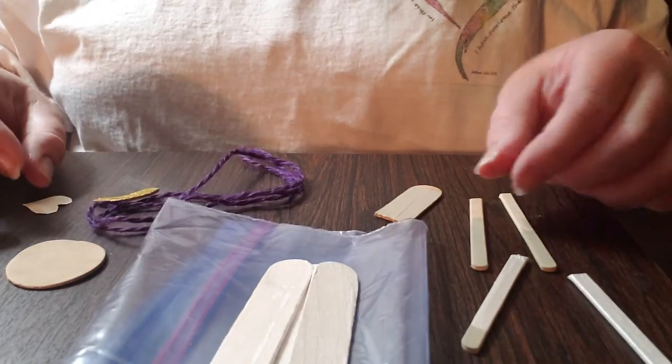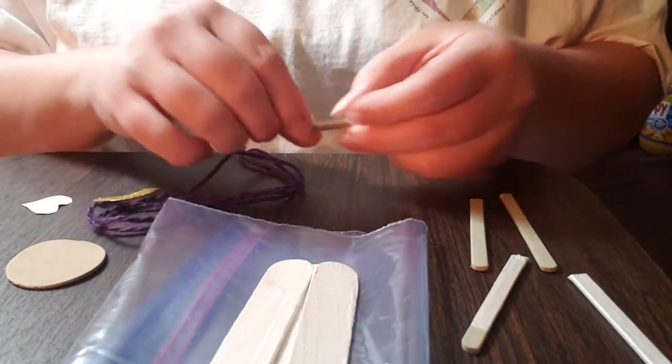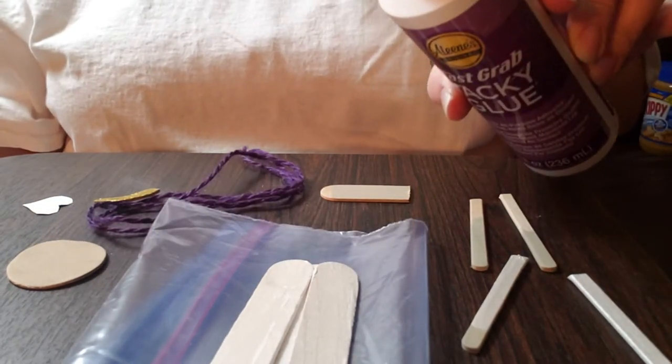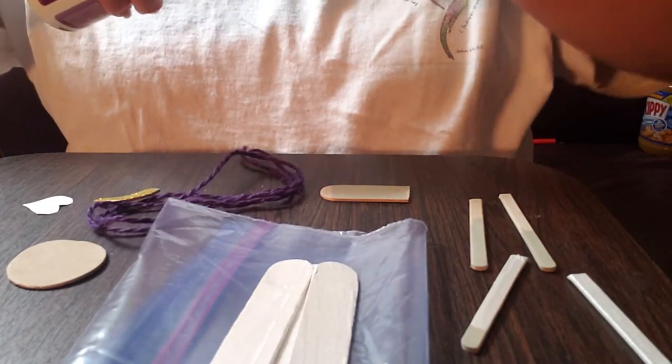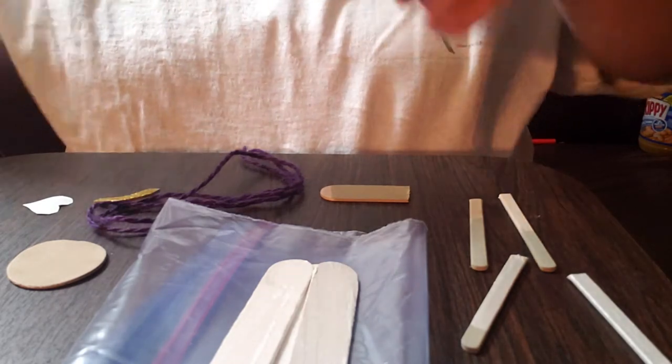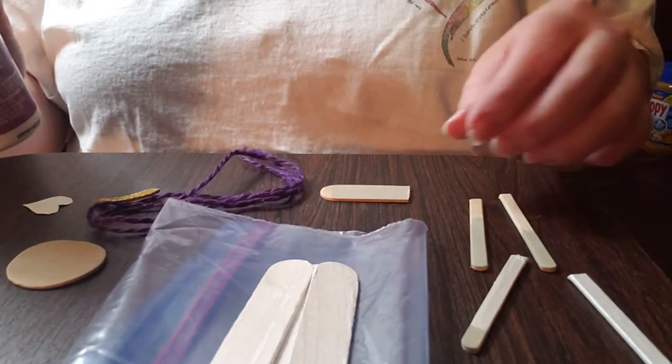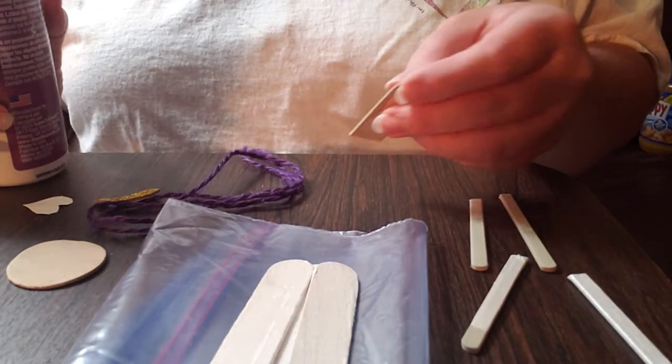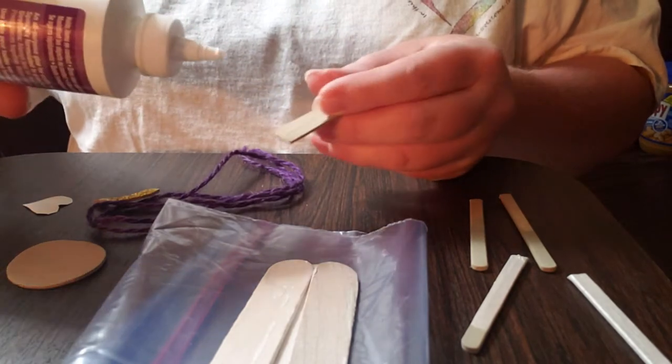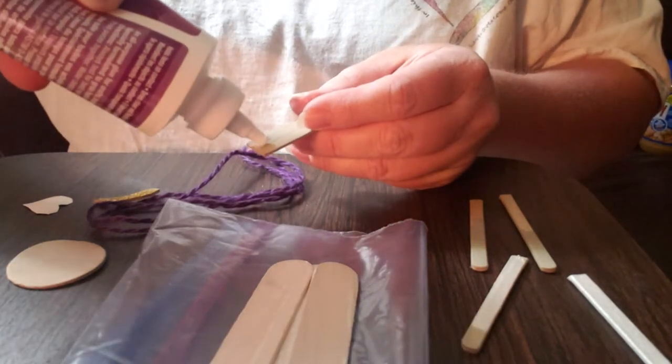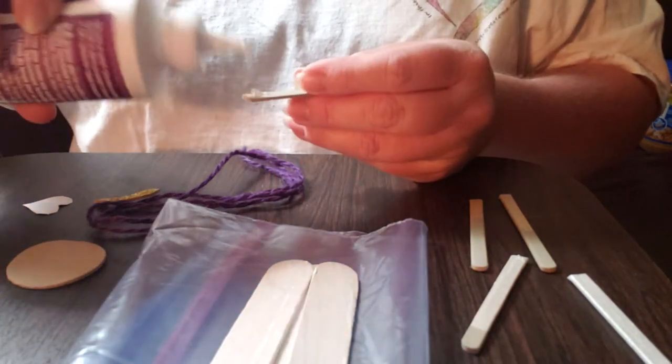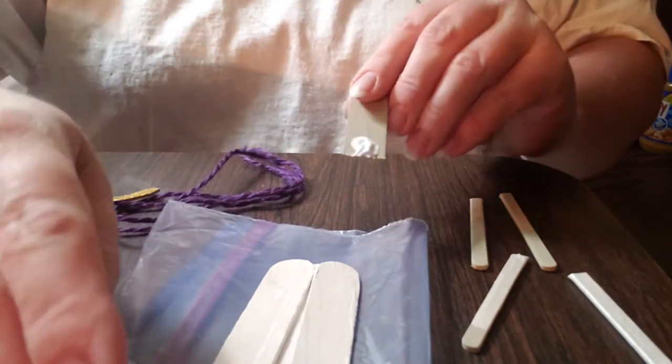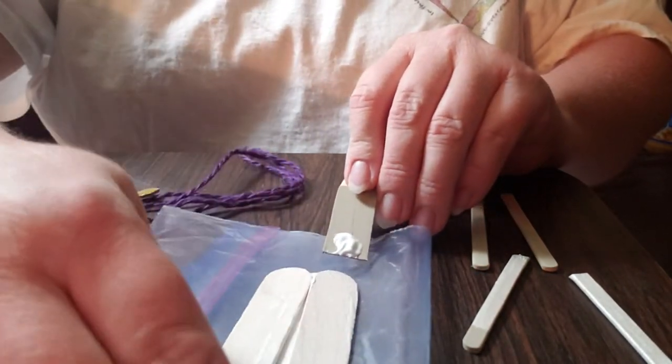The first thing we're going to do is use some glue. A nice tacky glue is good, but you could also use hot glue with a parent or an adult. You could probably try a stick glue as well. And we are going to put some glue here and glue underneath the body.